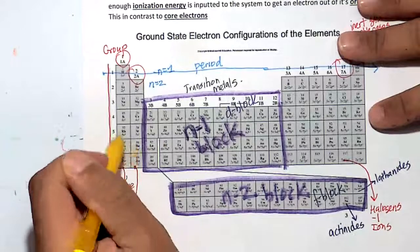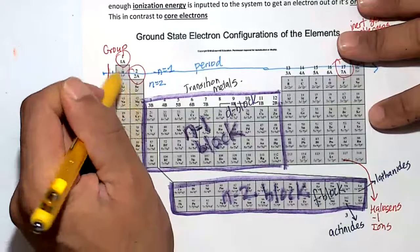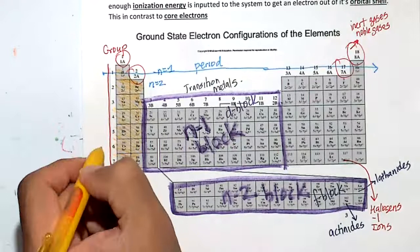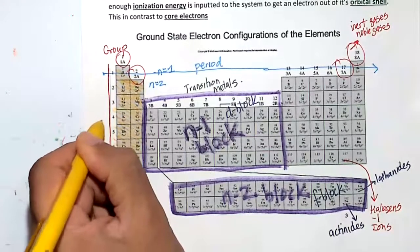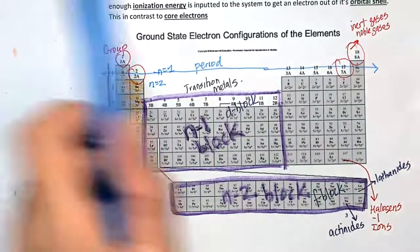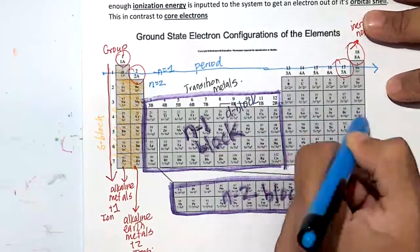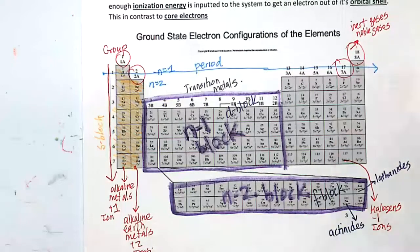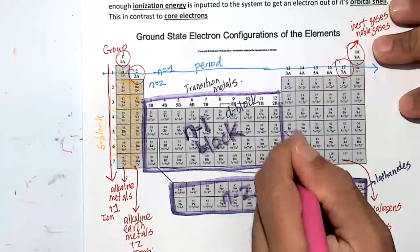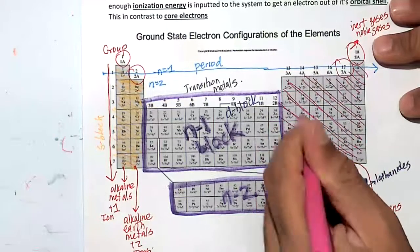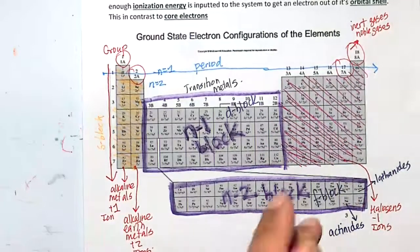This right here is called the s block. Forget hydrogen, hydrogen is weird, so I will not do hydrogen here. This is called the s block. And then finally, this is called the p block.